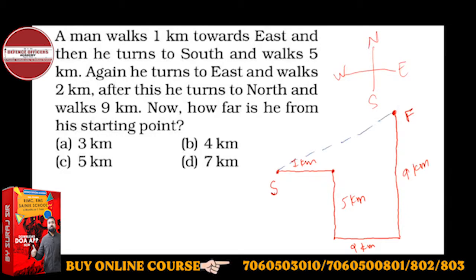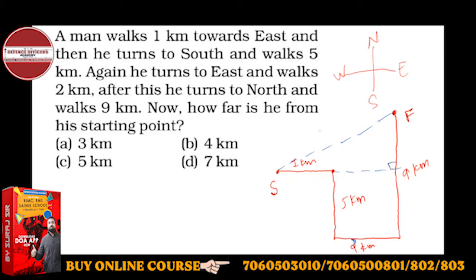If you do this construction, you will see a right angle triangle. So this right angle triangle has a 90-degree angle. This is the hypotenuse H which you have to calculate. The height is nothing but four kilometers.